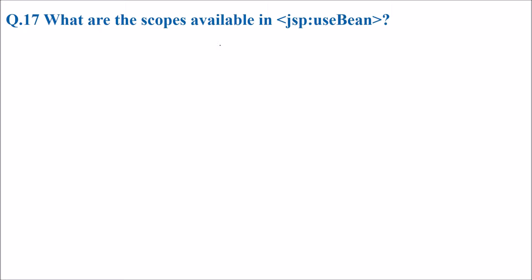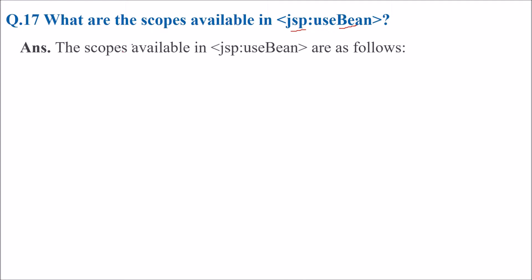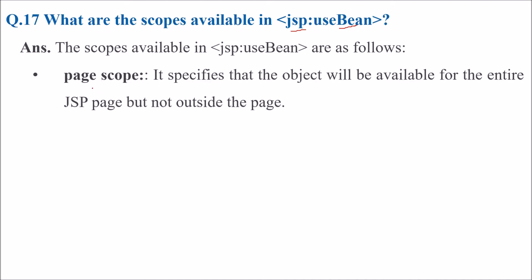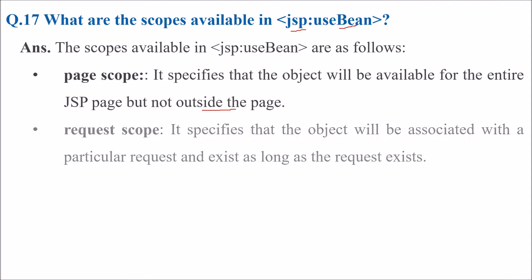Next: what are the scopes available in JSP useBean? The first is page scope. This page scope specifies the object will be available for the entire JSP page but not outside the page. Request scope specifies that the object will be associated with a particular request and exists as long as the request exists.